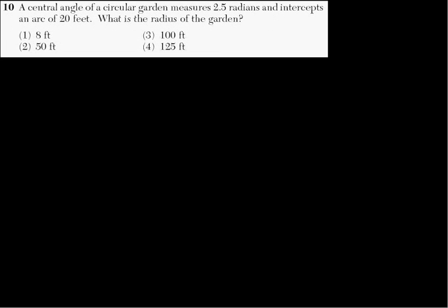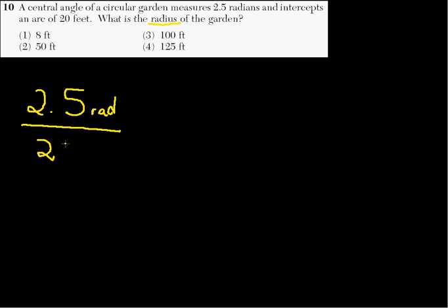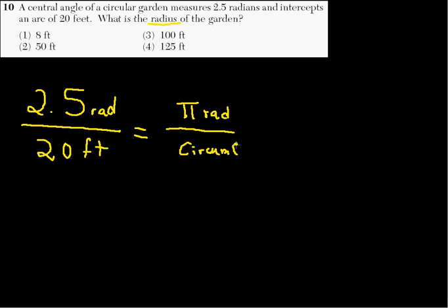Problem number 10. A central angle of a circular garden measures 2.5 radians and intercepts an arc of 20 feet. What is the radius of the garden? We're looking for the radius, and the simplest way to do this is to set up a proportion. So 2.5 radians over 20 feet equals...